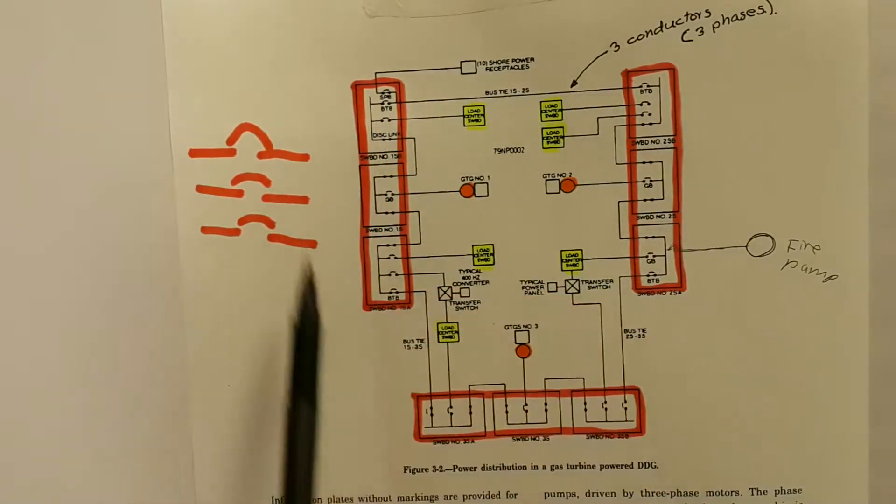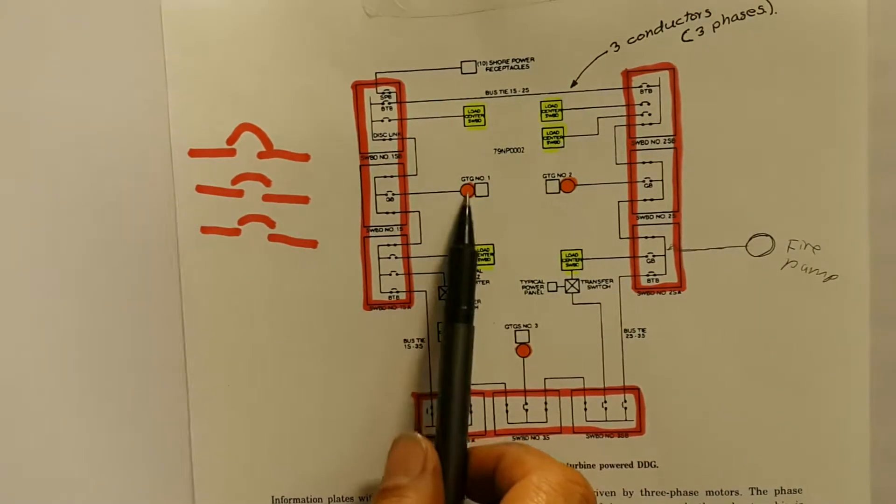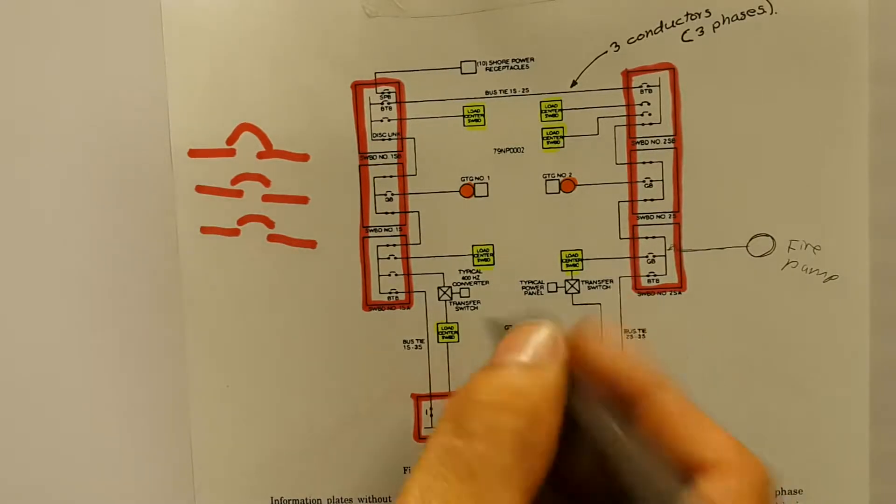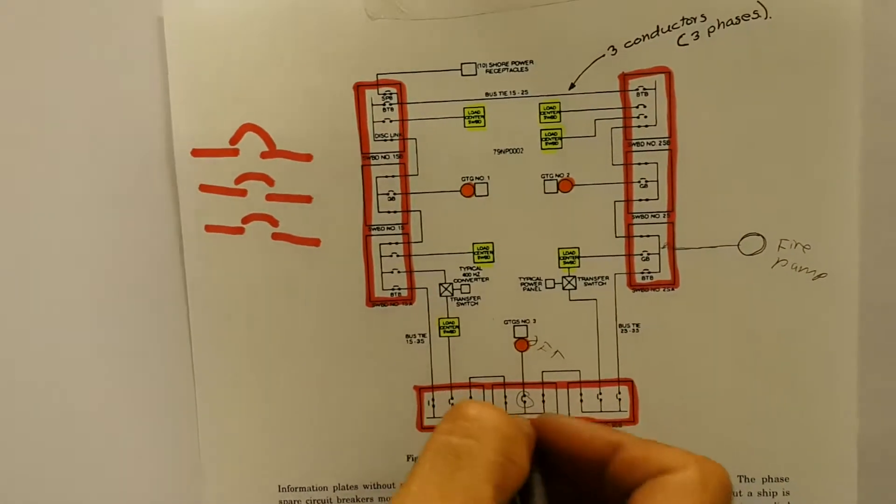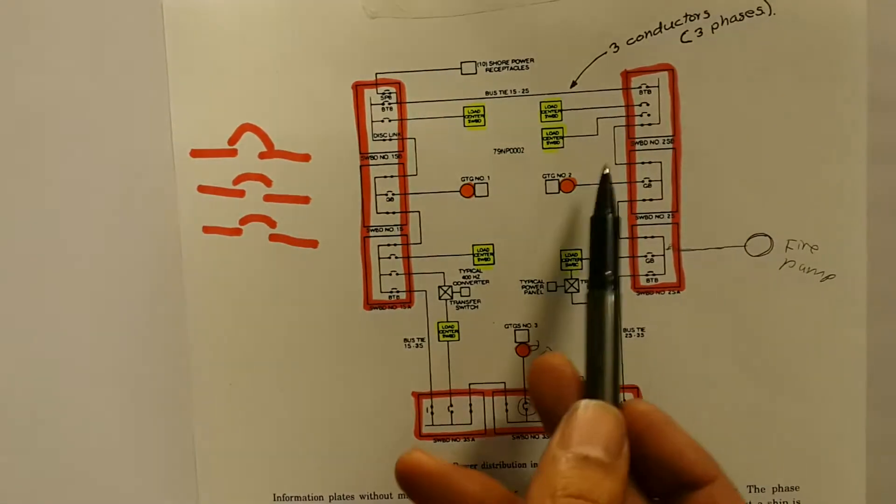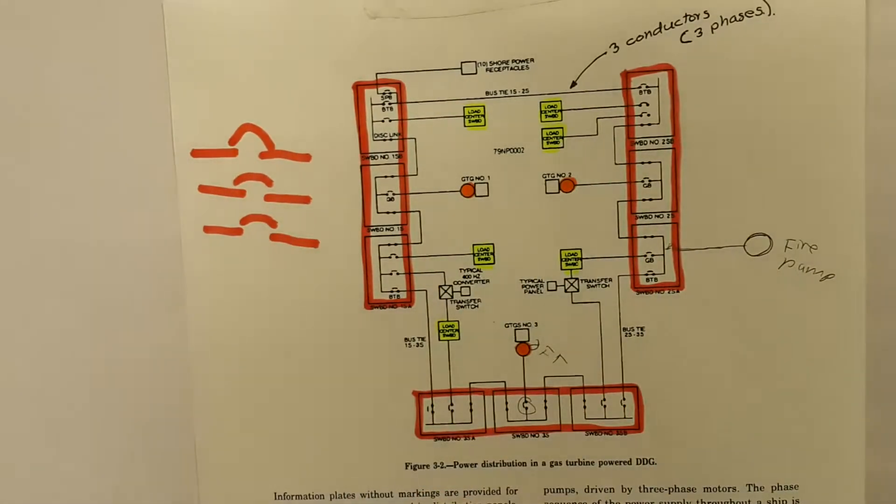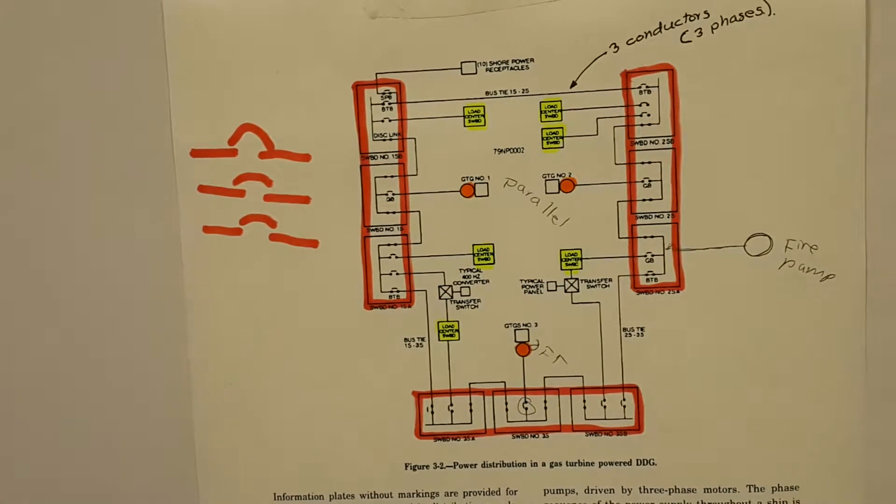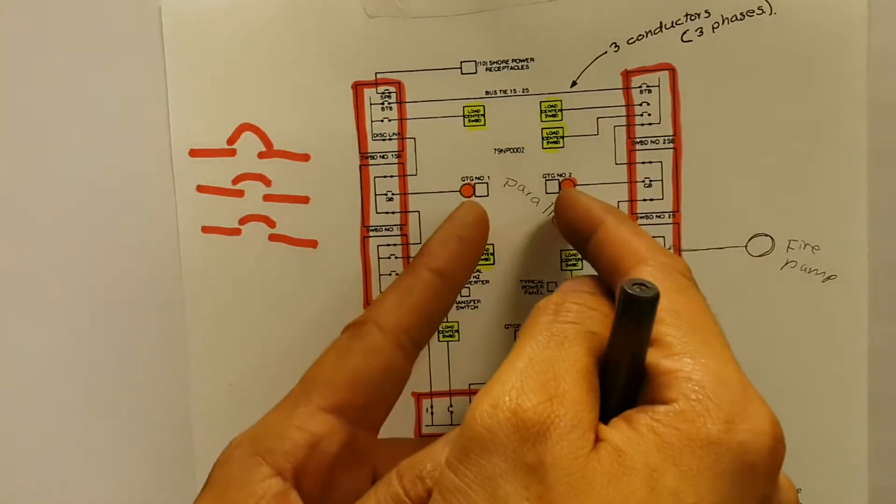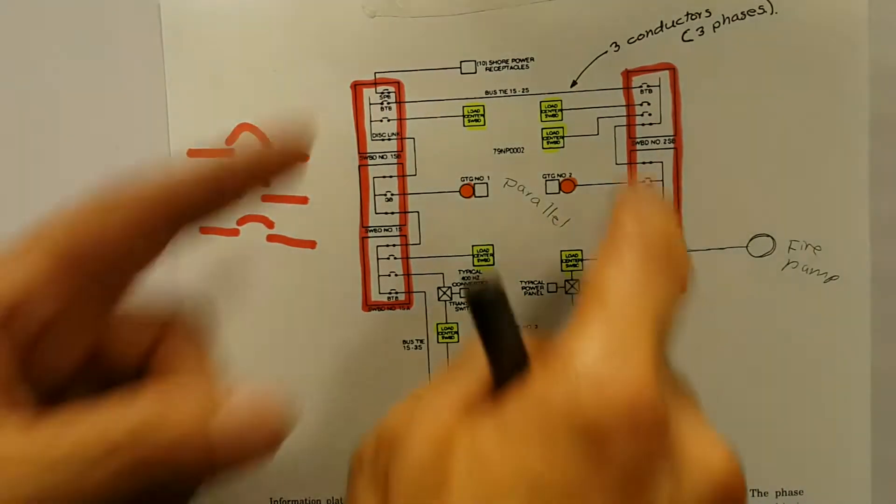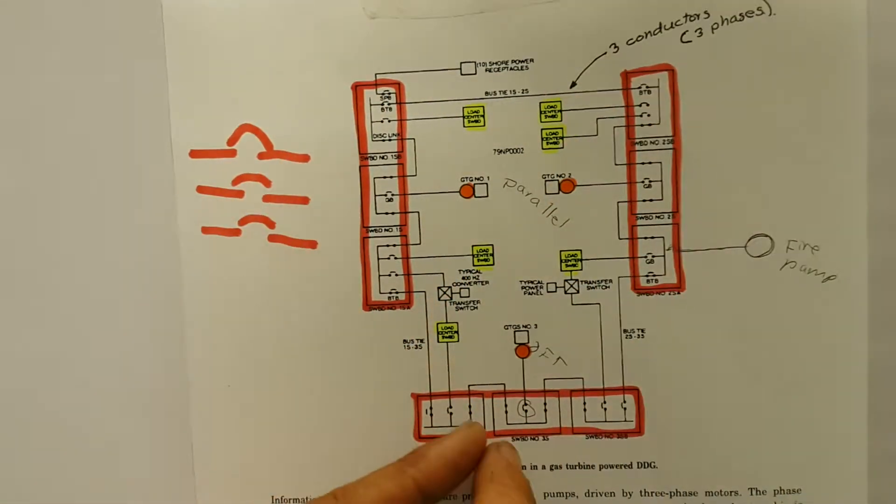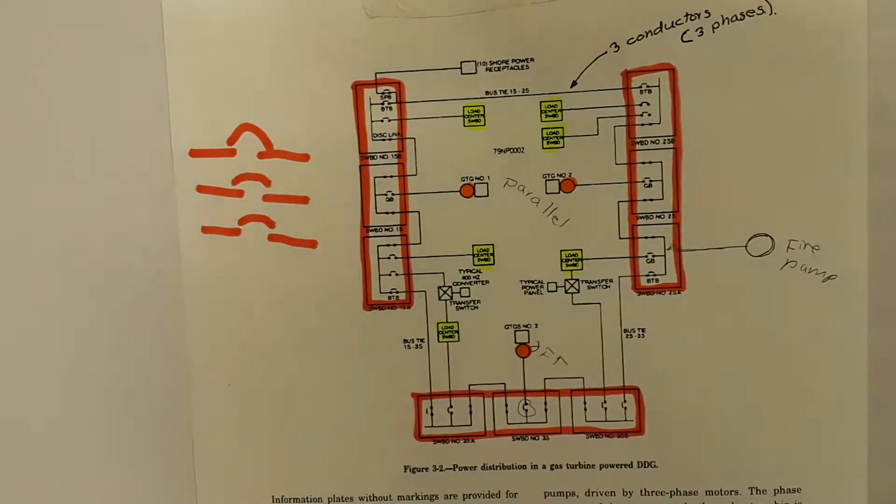That is done whenever you have two generators, let's say one and two on, number three will be off, and this breaker will be open. But one and two can be in parallel. What it means is that, as long as everything is closed with this one open, you will be able to power the entire ship from those two generators.